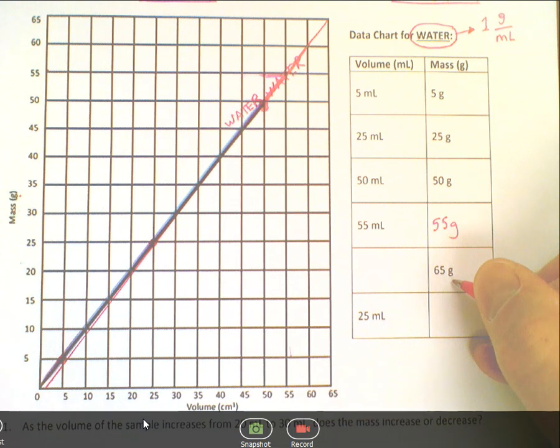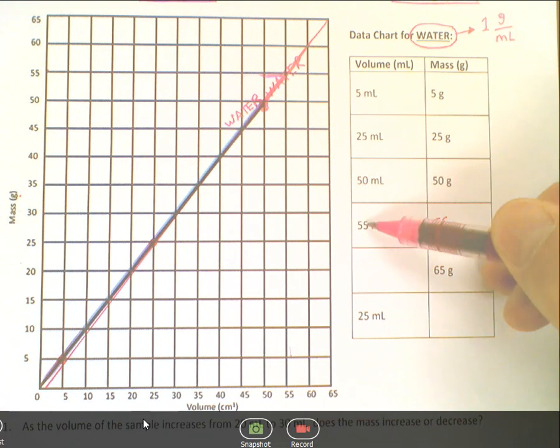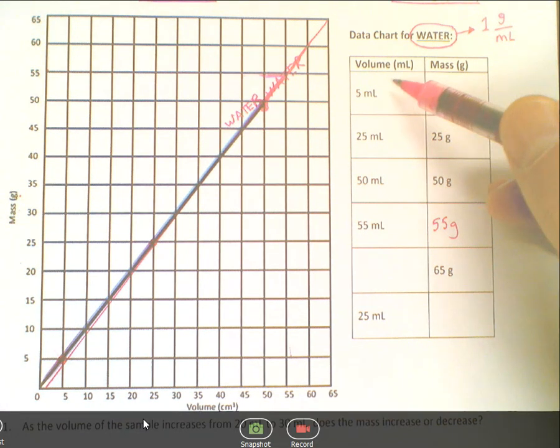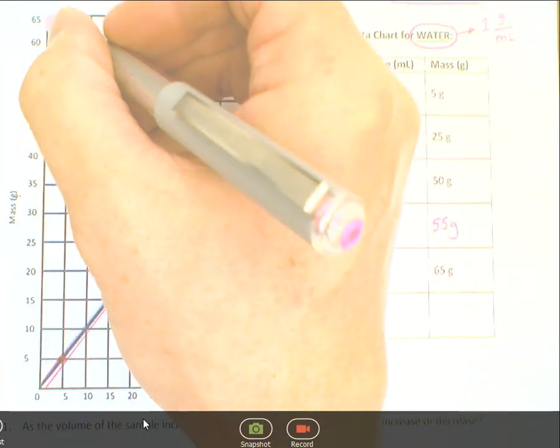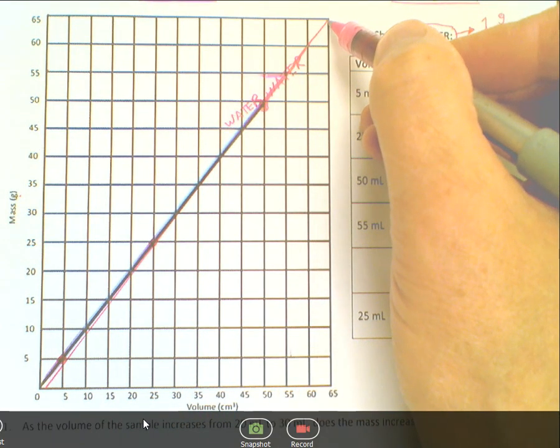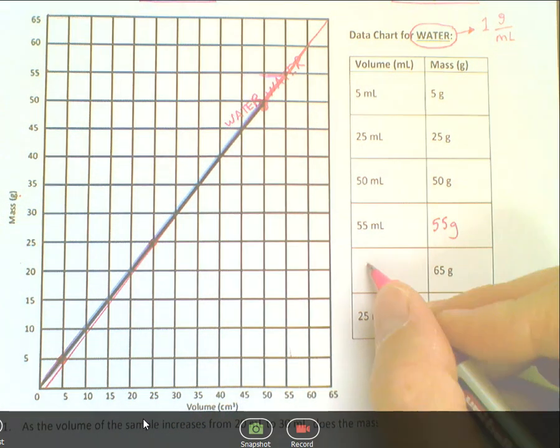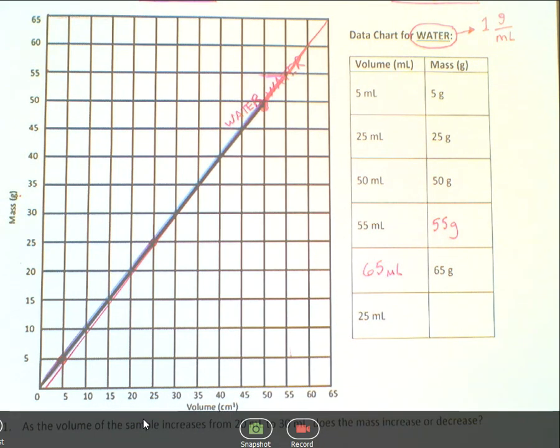What about if I had 65 grams? Well, what you can see is that for every milliliter, it looks like there's, for 50 milliliters, 50 grams. 55 milliliters, 55 grams. 5 milliliters, 5 grams. So it looks like that if you had 65 grams, which is over here, so 65 grams, we go across, hit the line, come down. Oh, it's 65 milliliters.